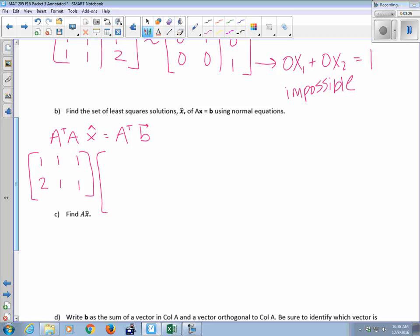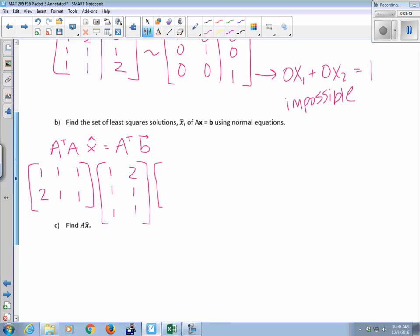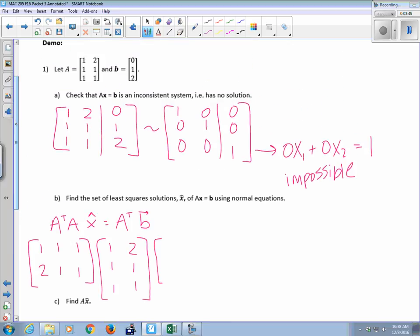A was given, 1, 1, 1, 2, 1, 1, and X hat, that's a vector containing how many X's? 2, yeah. If you go back up to where we tried to actually solve A, X equals B, right, we have an X1 column and an X2 column, and that's it. So 0, X1 plus 0, X2 equals 1, so there's just an X1 and an X2.